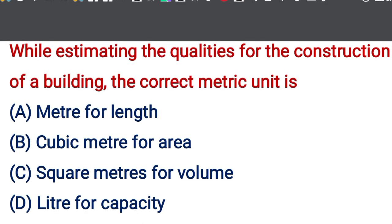While estimating the qualities of the construction of a building, the correct metric unit is — option A: meter for length, option B: cubic meter for area, option C: square meter for volume, option D: liter for capacity. The correct answer is option D, liter for capacity.